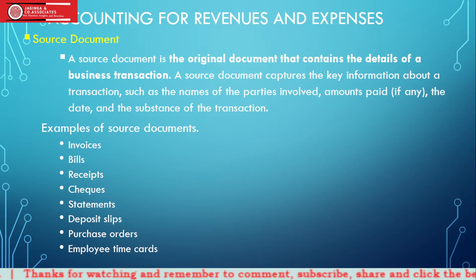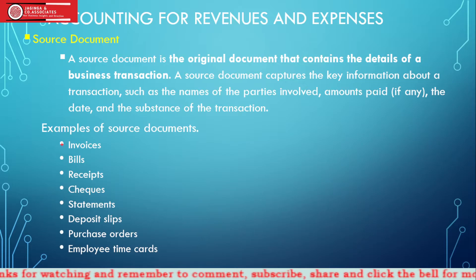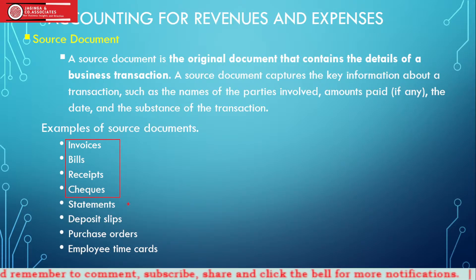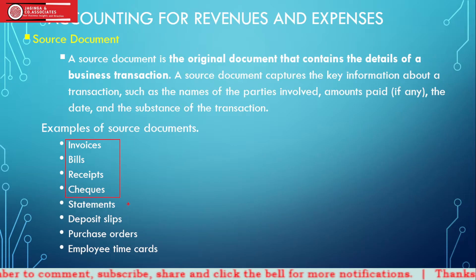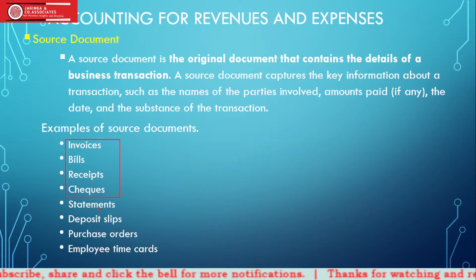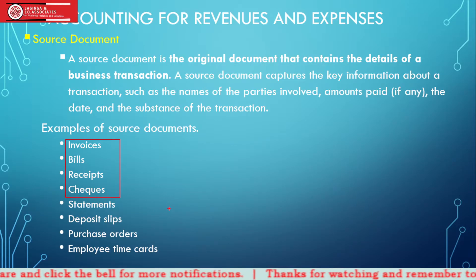The four we'll explain are invoices, bills, receipts, and checks. We'll just talk briefly about them. For statements, deposit slips, purchase orders, and employee time cards, I want you to try to do some more research and read about those on your own.